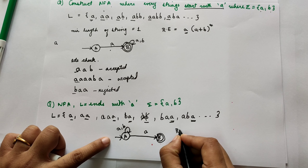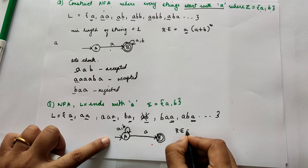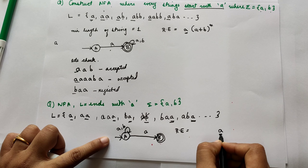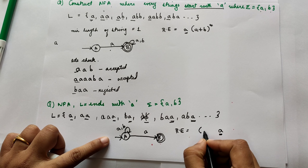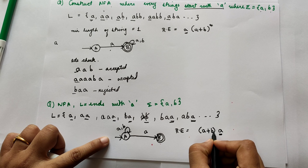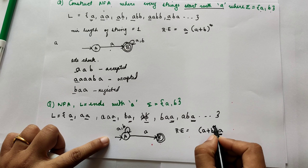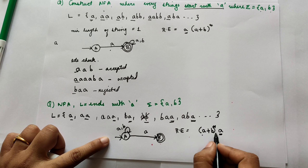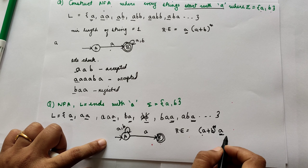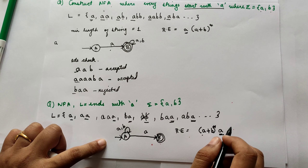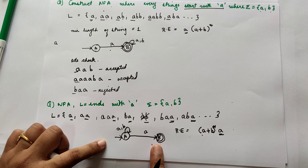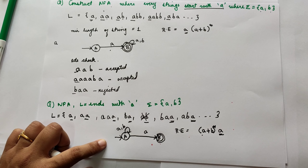The regular expression for this language is (A+B)* followed by A, because before the ending A there can be any combination of A and B, but the string must end with A only. In this way we can draw the NFA for strings ending with A. We will see some more examples in the upcoming videos.